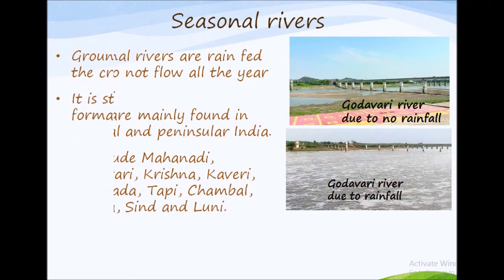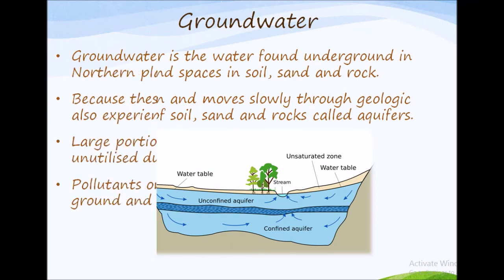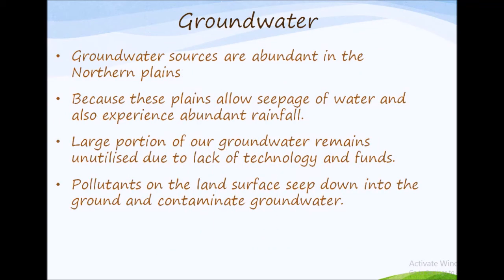Now let's discuss groundwater sources. Groundwater sources are abundant in the northern plains because these plains allow seepage of water and also experience abundant rainfall. It is also because these plains are made up of rich perennial river basins. However, a large portion of our groundwater remains unutilized due to lack of technology and funds. Sometimes, pollutants on the land surface seep down into the ground and contaminate groundwater, which is an alarming situation in many places, especially where groundwater is utilized for drinking and agriculture.